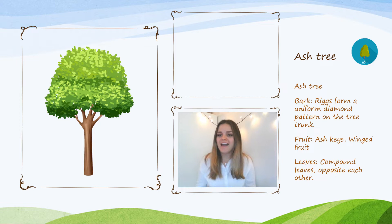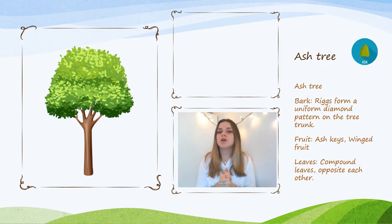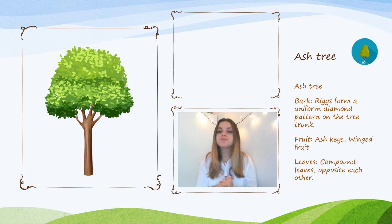Next we're going to look at the ash tree, which is another deciduous tree you can find in most places in the UK. I like to refer to this as the 'perfectionist tree' because every single characteristic is very specific and perfectly lined up and symmetrical — it loves when things are perfectly in their place. If we look at the bark, it creates diamond shapes all the way along the trunk and they are usually perfectly uniform, almost like a pattern — like somebody painted it on.